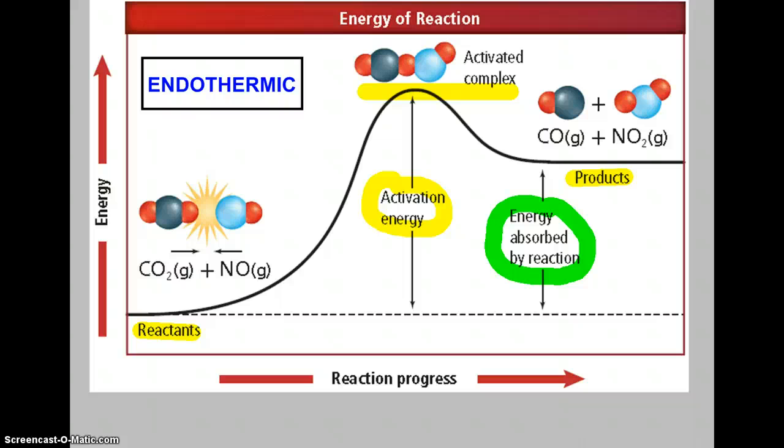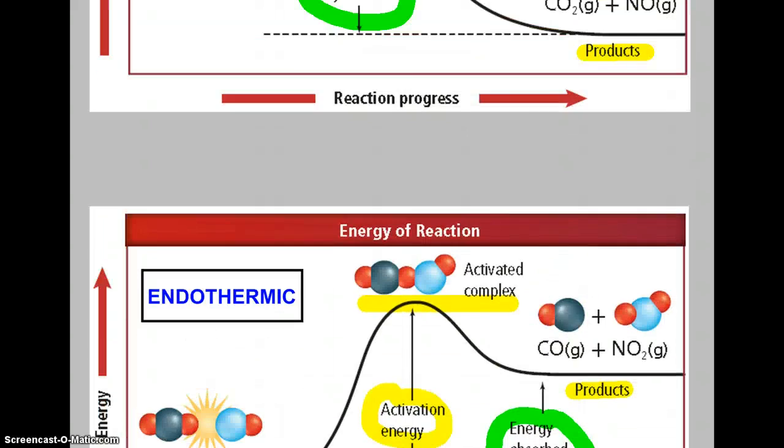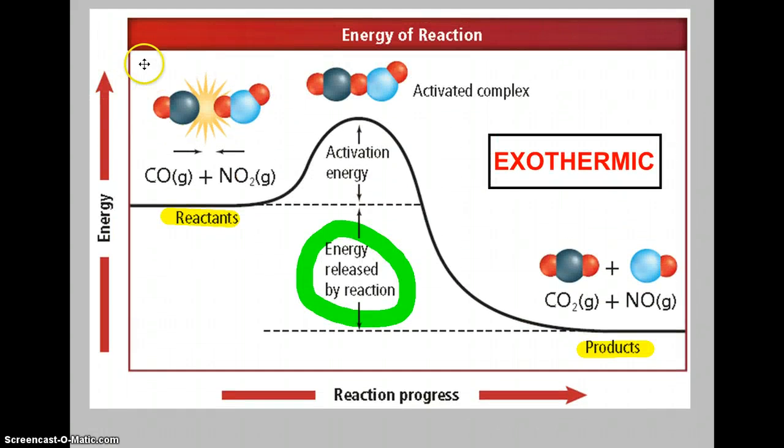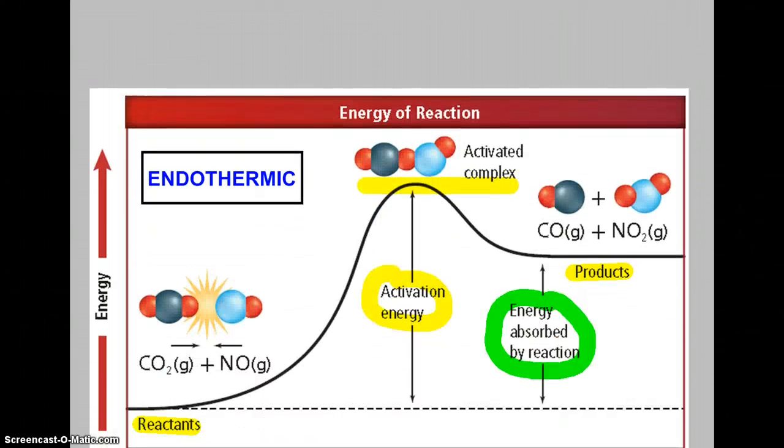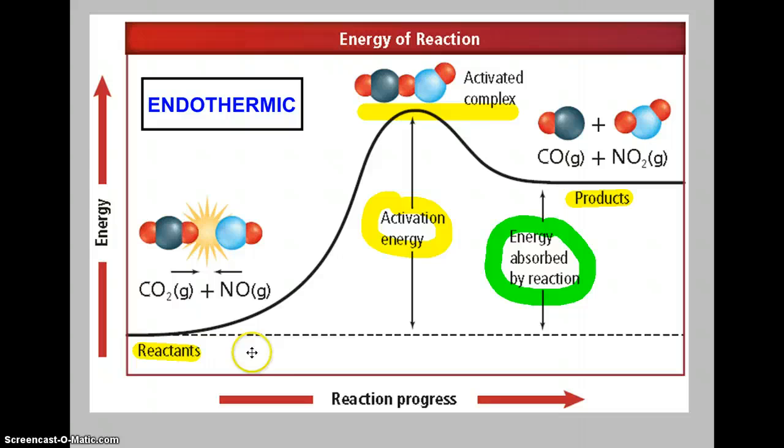Just a brief sum up. Your collision theory: these reactant atoms, ions, molecules, they must collide. They must do so in the correct orientation and with enough energy in order to become products. If the products have less energy, then that is an exothermic reaction because energy was released. If the products have more energy, then that's an endothermic reaction.